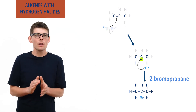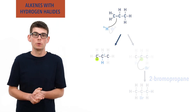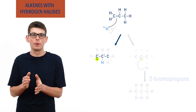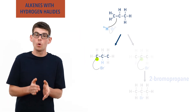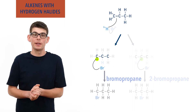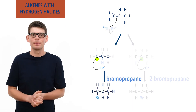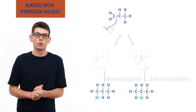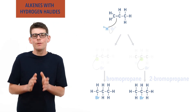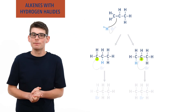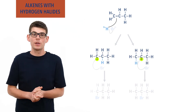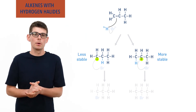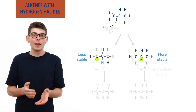However, if the hydrogen bonds to carbon 2 in the propene molecule, carbon 1 will end up with a positive charge in the intermediate — a primary carbocation. The bromide ion will bond to carbon 1 in the intermediate, and 1-bromopropane will get formed. When the reaction is actually carried out, there is much more 2-bromopropane formed than 1-bromopropane. This is because the secondary carbocation intermediate that leads to 2-bromopropane formation is more stable than the primary carbocation intermediate that leads to 1-bromopropane, making it easier and more likely to form.